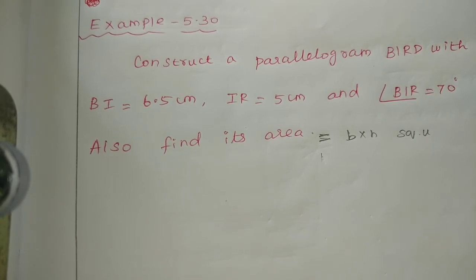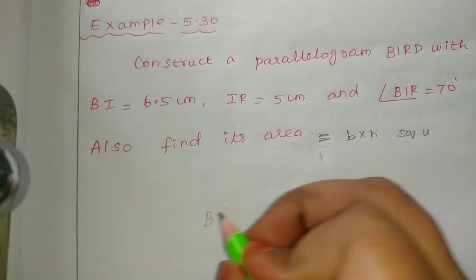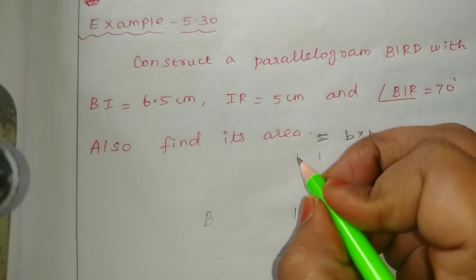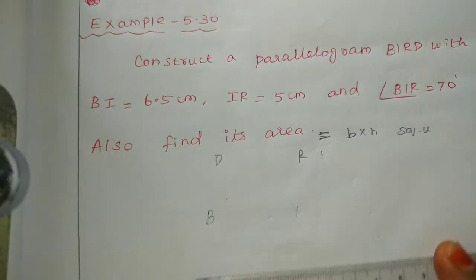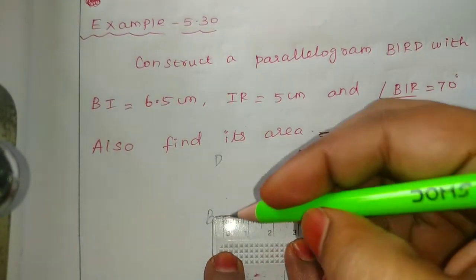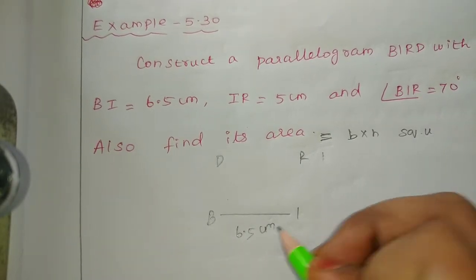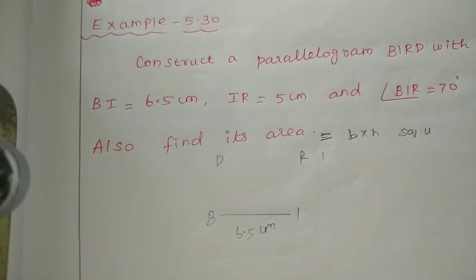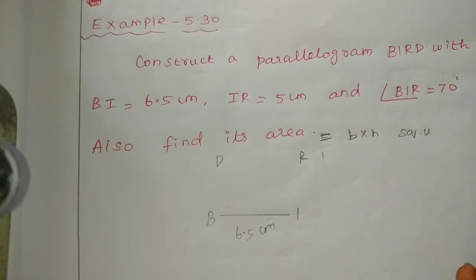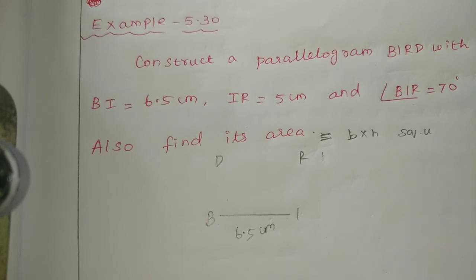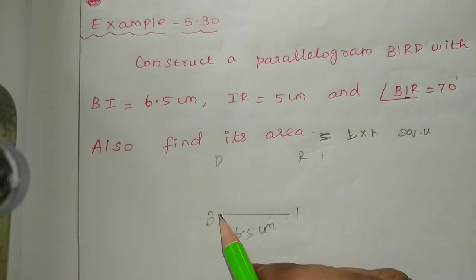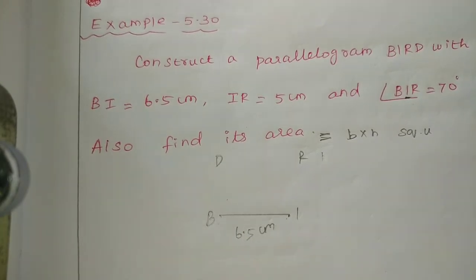First, we will do the usual rough diagram. The vertices are B, I, R, D — parallelogram BIRD. The first base BI is 6.5 cm. Next, angle BIR equal to 70 degrees. At B, the angle R equals the high lower line.